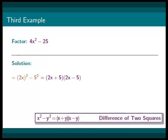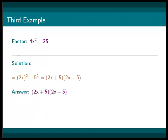Then, from our formula, we get 2x plus 5 times 2x minus 5. In conclusion, our answer is 2x plus 5 times 2x minus 5.